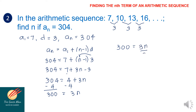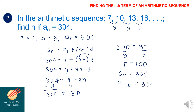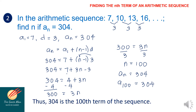Dividing both sides by 3, n equals 100. Since a sub n equals 304, we can say a sub 100 equals 304. Therefore, 304 is the 100th term of the sequence.